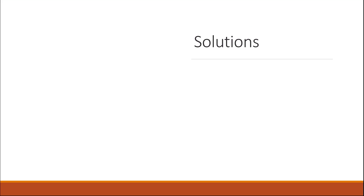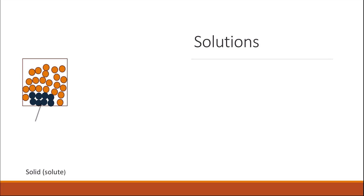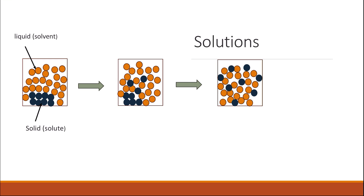Solubility. Before we talk about solubility, we need to understand what a solution is. A solution is a mixture of a solvent and a solid. If you add a solid, which is called the solute, into a liquid, which is the solvent, the attraction forces between the solid will start to break and the solid will start to diffuse through the liquid. This continues until the solid particles diffuse completely through the liquid and all the bonds of attraction between the solids are broken. This is called the solution — the mixture of the solute with the solvent.